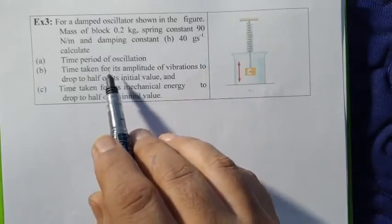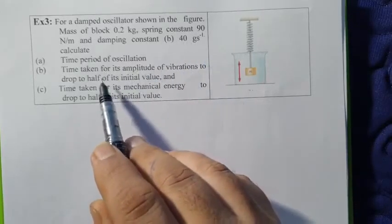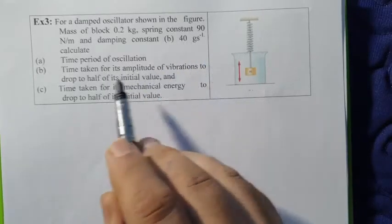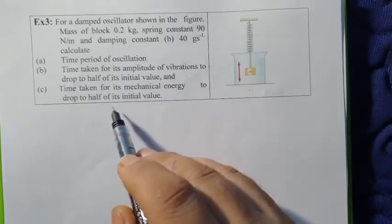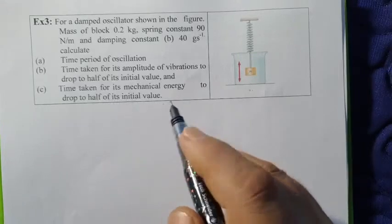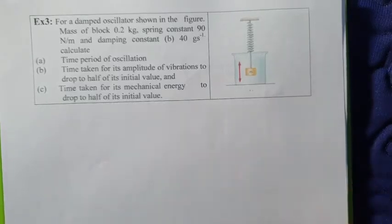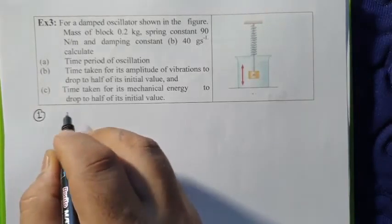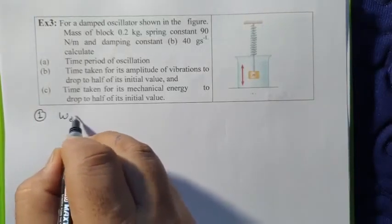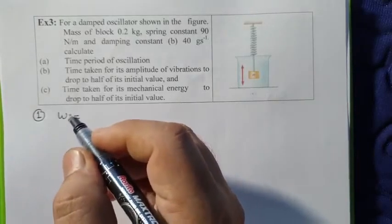We need to know the time period of oscillation, time taken for its amplitude of vibration to drop to half of its initial value, and time taken for its mechanical energy to drop to half of its initial value. It's a damped oscillation, so first of all we will calculate the time period. For this, we will have omega_d requirement, so omega_d will be...